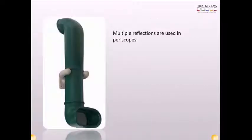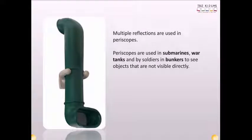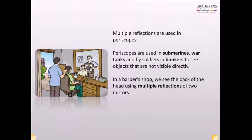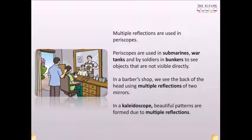Multiple reflections are used in periscopes. Periscopes are used in submarines, war tanks, and by soldiers in bunkers to see objects that are not visible directly. In a barber's shop, we see the back of the head using multiple reflections of two mirrors. In a kaleidoscope, beautiful patterns are formed due to multiple reflections.